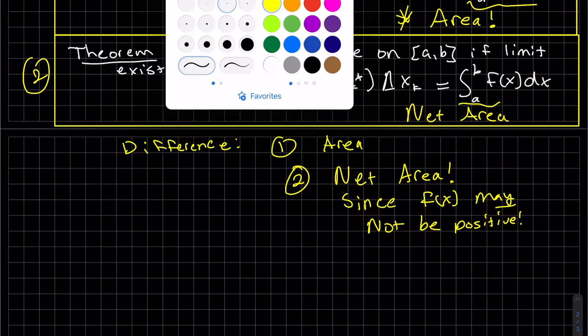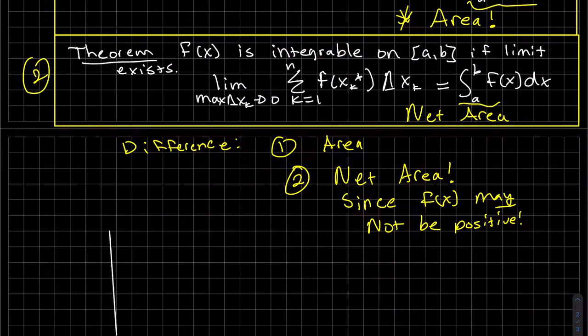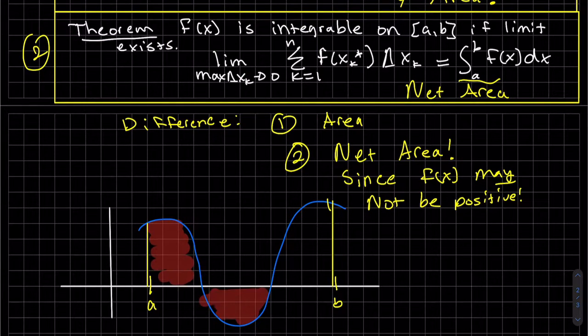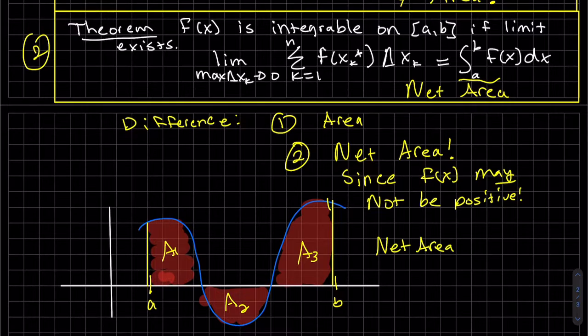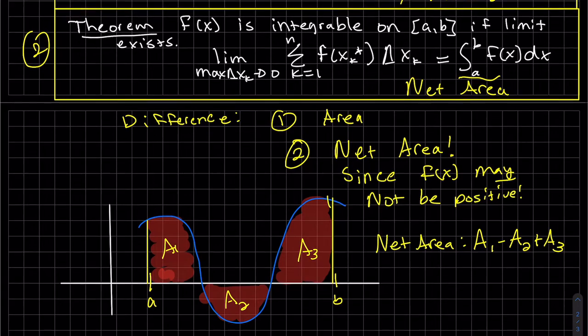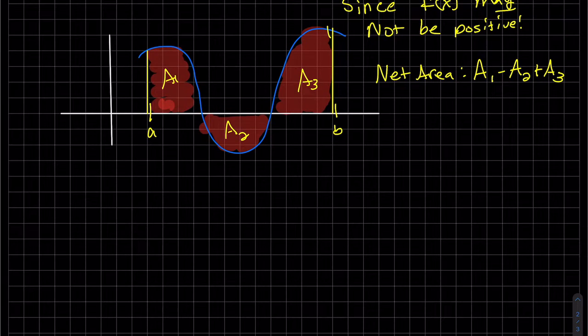Just to remind you, draw a picture of what the area would look like. Net area will be area one minus area two plus area three. This area, this integral from here to here, will just be negative. That's what's going on because the function is negative.